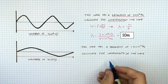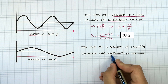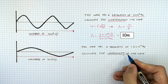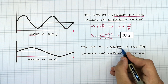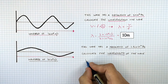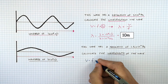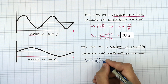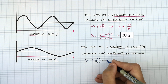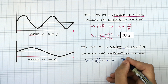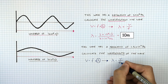For question 2, you've been asked to calculate the wavelength of the wave. Recall V equals f lambda, because you've got frequency, wave speed, and wavelength. Rearrange for wavelength lambda, so that's going to be wavelength equals V over f.